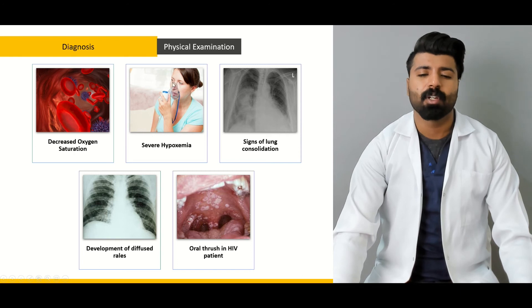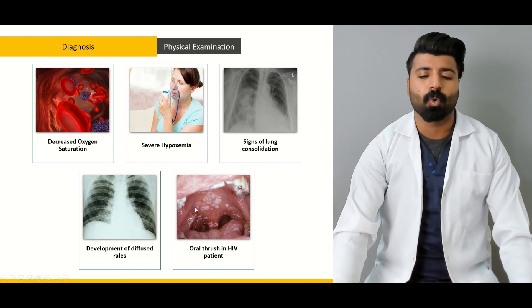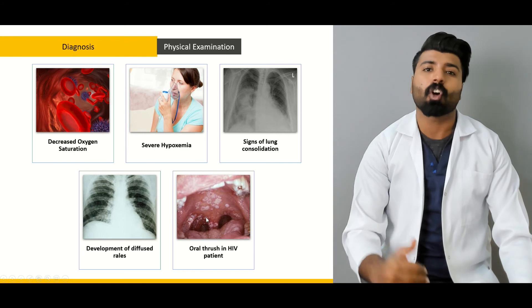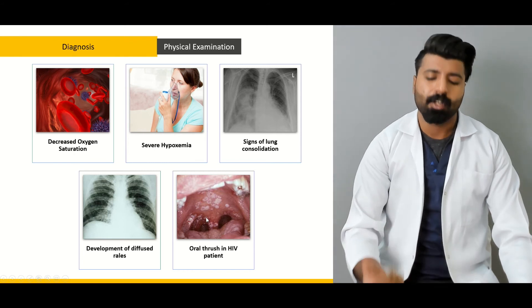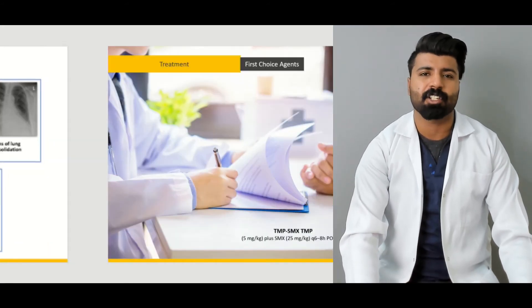Regarding diagnostic modalities, we'll look at the decreased oxygen saturation caused by destroyed alveoli, severe hypoxemia, signs of lung consolidation, development of diffuse rales, and oral thrush in HIV patients — and why all of these manifestations occur.